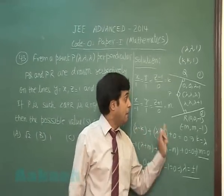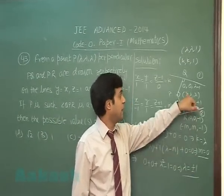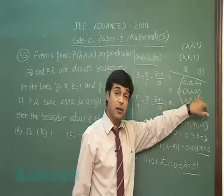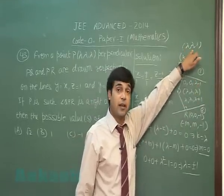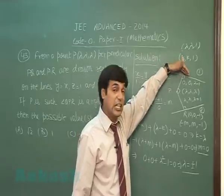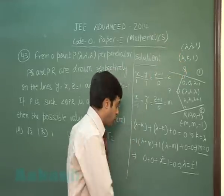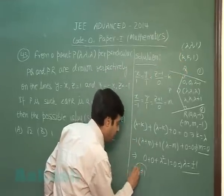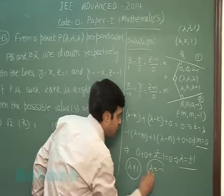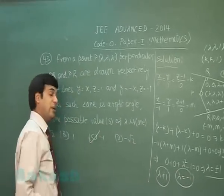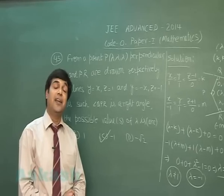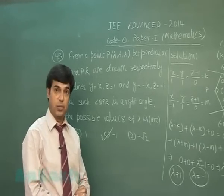Lambda equals plus minus 1. Both are there in options, but when I take λ = 1, I observe point P becomes (1, 1, 1). Point Q becomes (1, 1, 1), means P coincides with Q, means it is lying on line 1. So it should not be considered. So discarding 1, we get λ = -1. So only C is correct in this case. Let's move to next, that is 44th question.